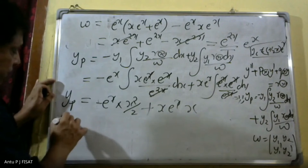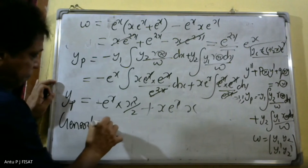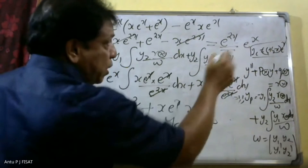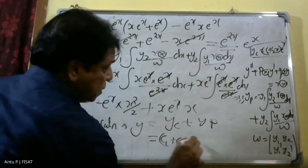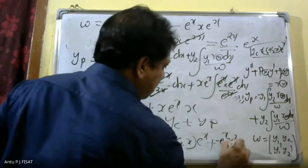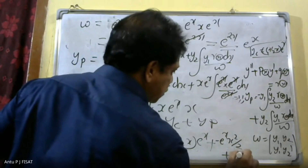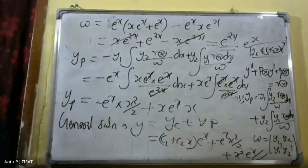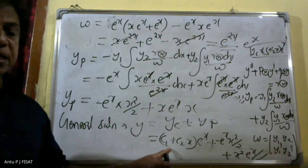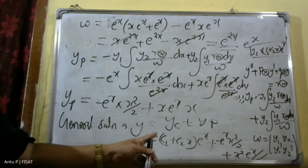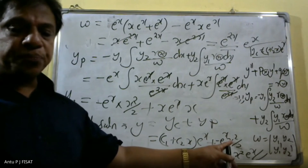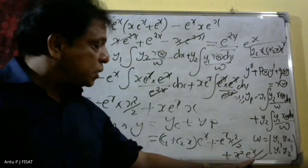Therefore, the total general solution is y equals y_c plus y_p. That is: y equals (c1 plus c2 x) e raised to x plus minus e raised to x times x squared by 2, plus x squared times e raised to x. This is the final solution of this problem.